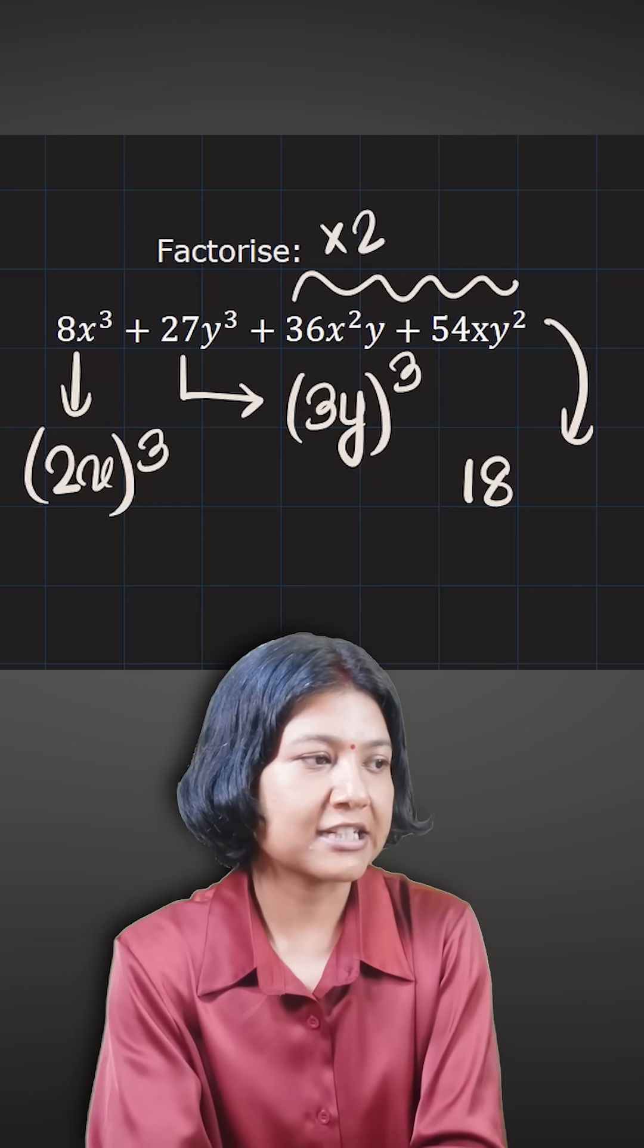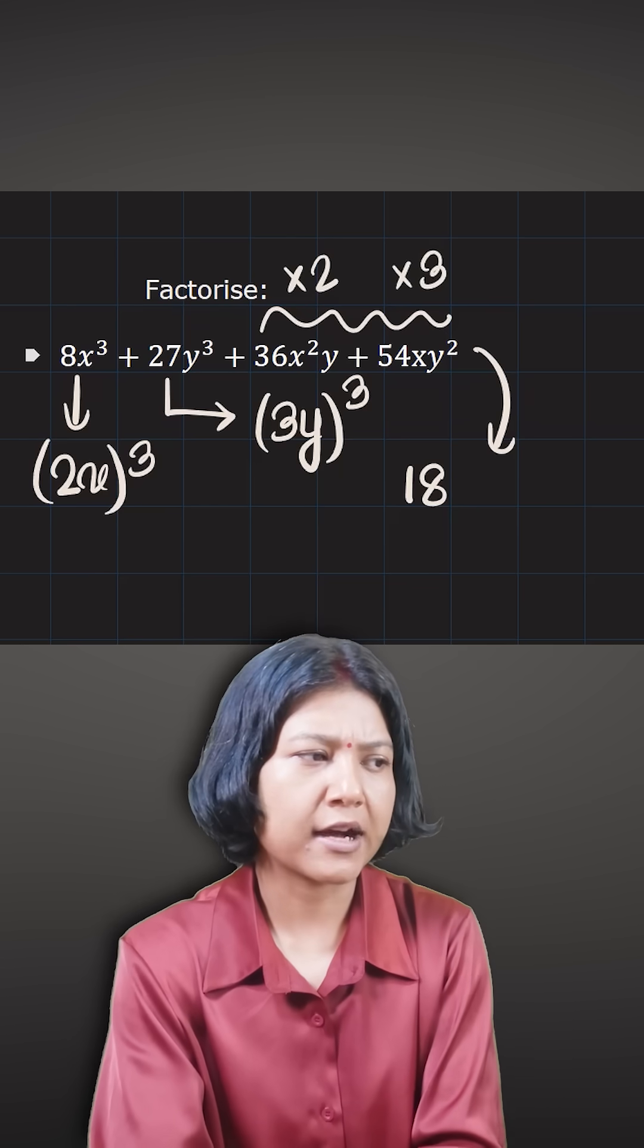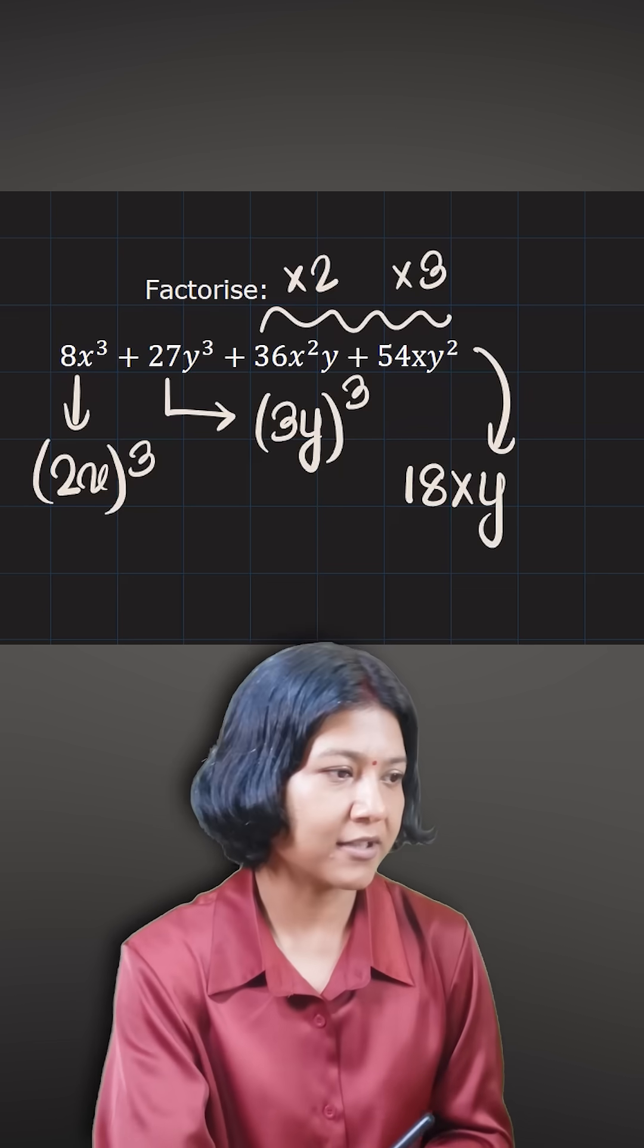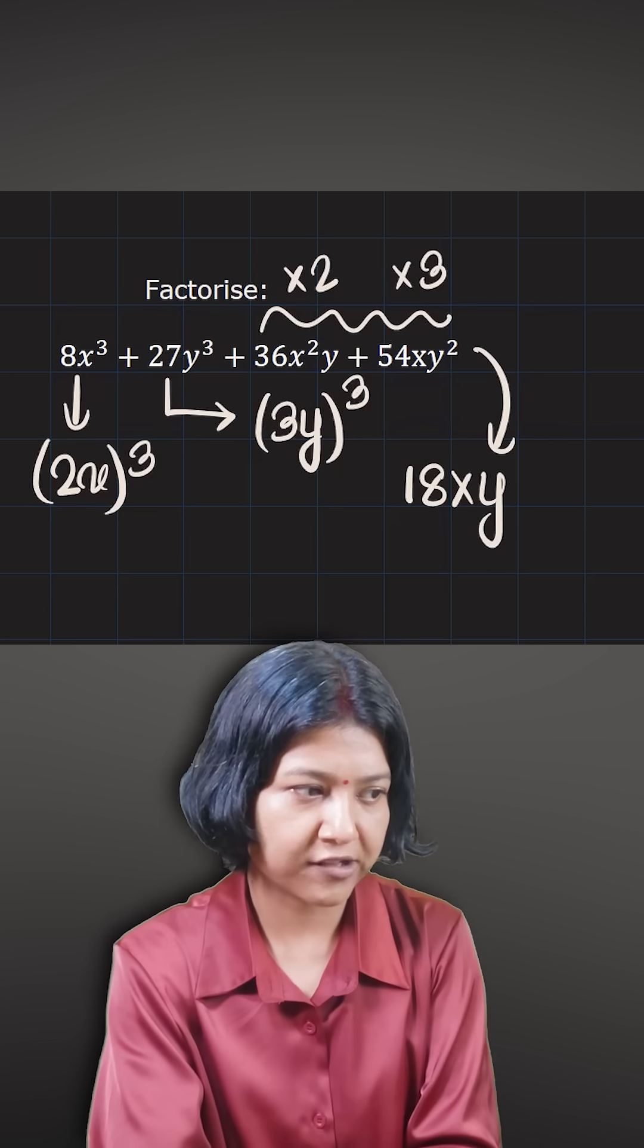18 times 2 is 36, 18 times 3 is 54. And if you look at the variable part x squared y and xy squared, both of them have at least one x and one y in common. Therefore 18xy happens to be the highest common factor for the last two terms.